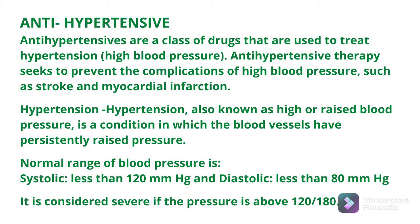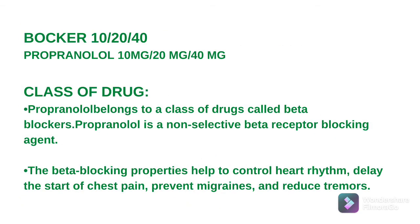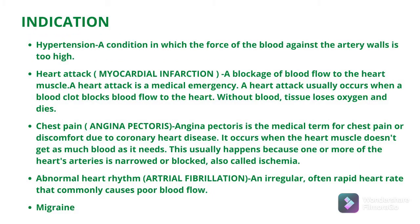Propanolol belongs to a class of drug called beta blocker. यह beta receptor blocking agent है। Beta receptor blocking property होने की वजह से इसको heart rhythm control करने के लिए, chest pain में, और migraine को prevent करने के लिए use करते हैं।